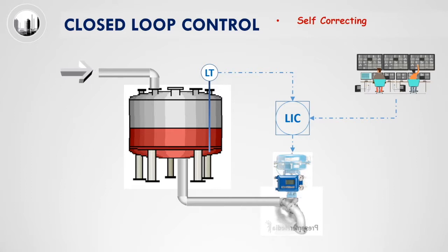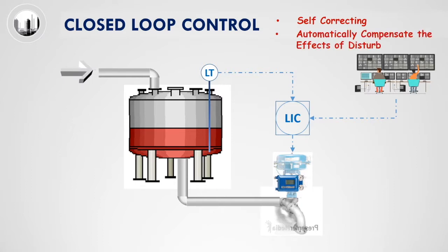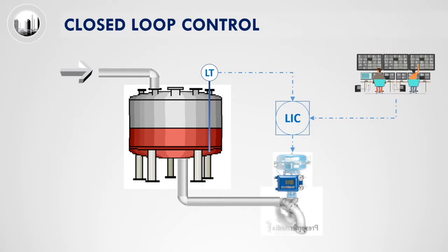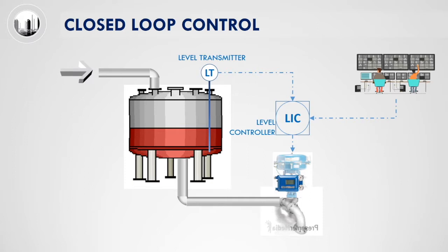Closed loop control will automatically compensate the effect of disturbances. LT is the level transmitter that measures the actual level in the tank. LIC is the level controller. The level controller also displays the current level reading and thus functions as an indicator. Therefore, LIC is a level indicating controller.